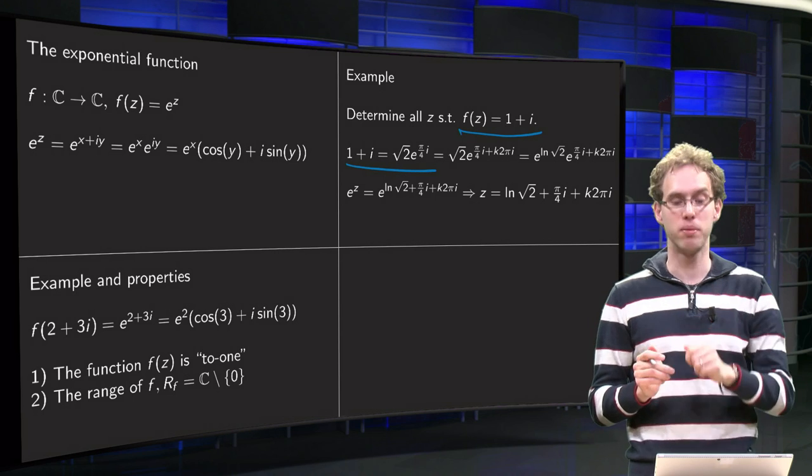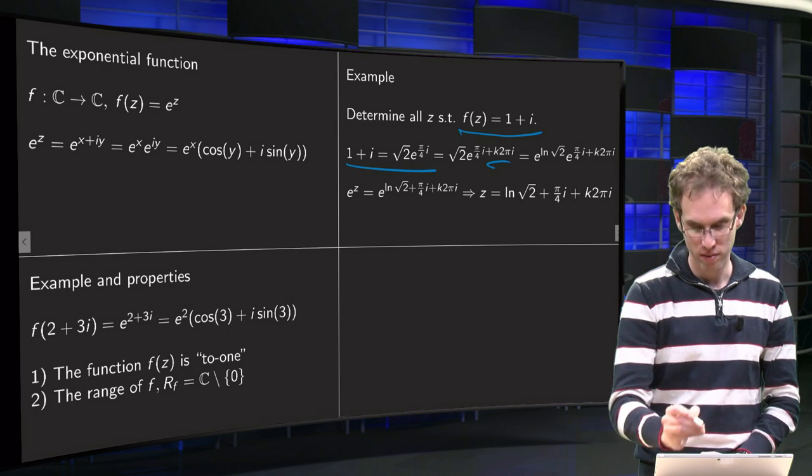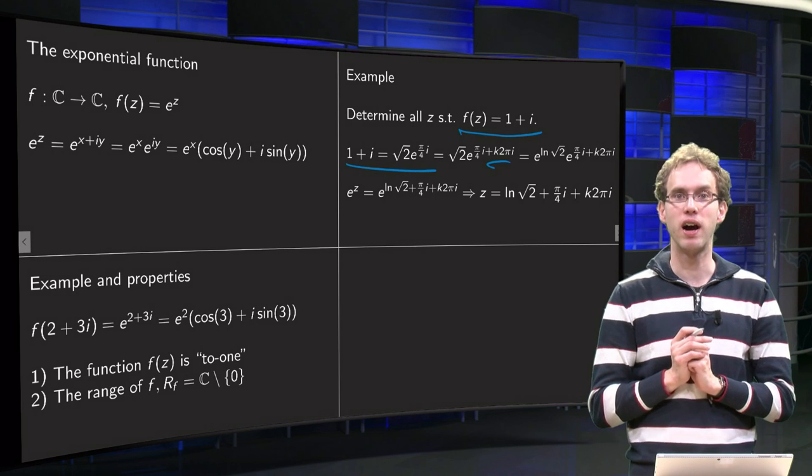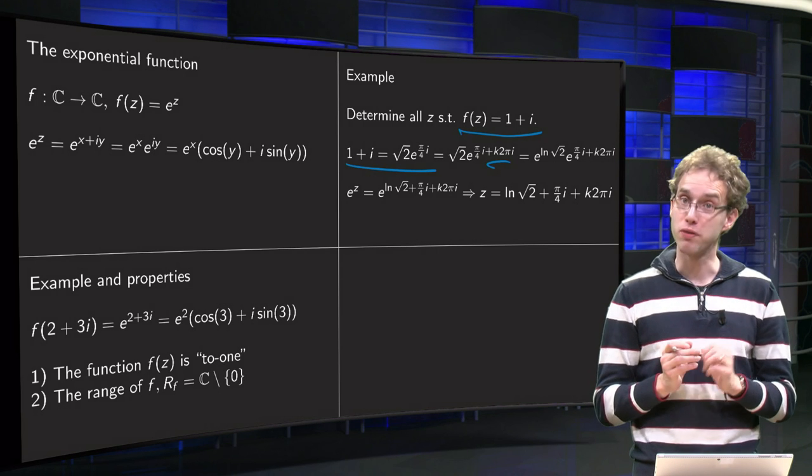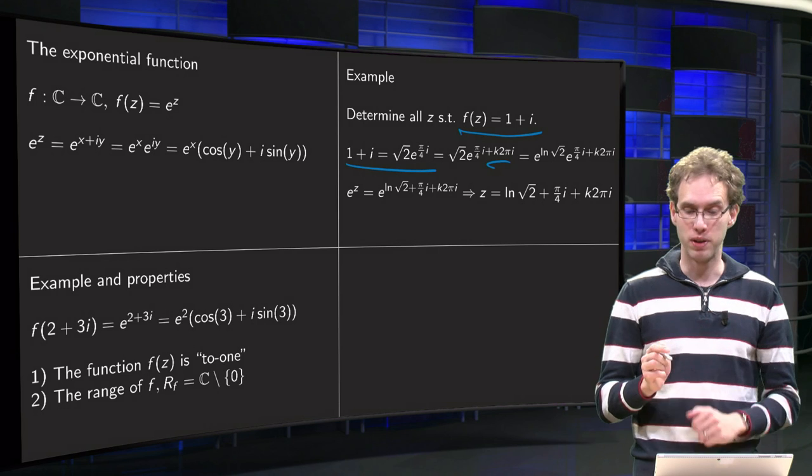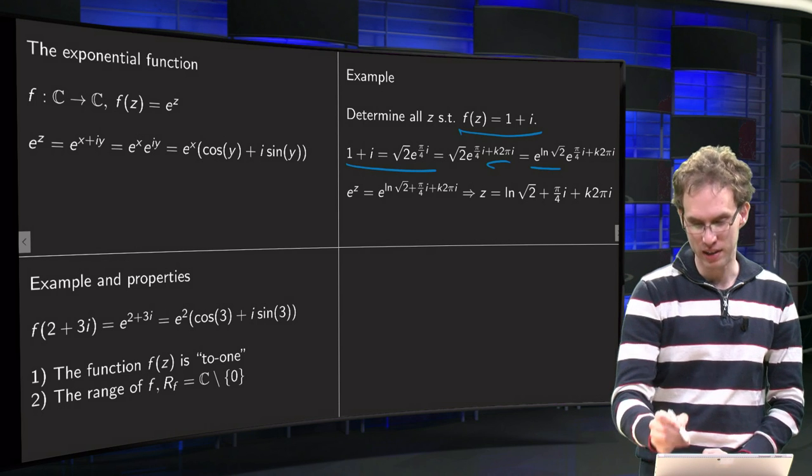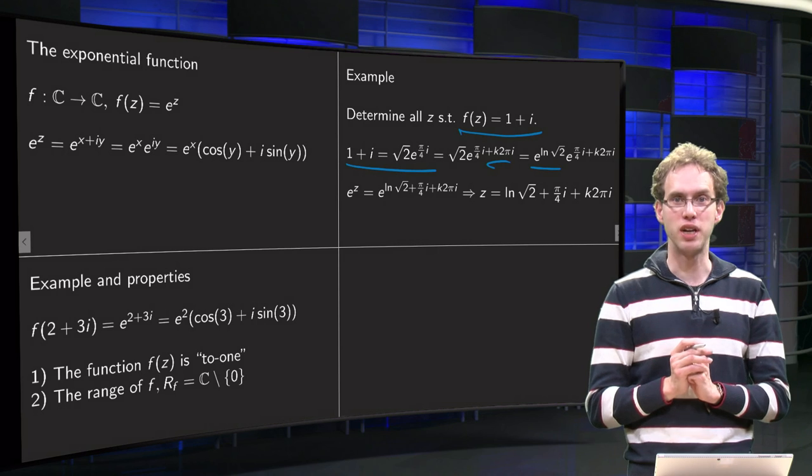Notice that you can always add factors of 2π to the argument, and you again get the same argument. So we add an arbitrary number k times 2π, and then we write our square root of 2 as an exponential as e to the power ln square root of 2, and we keep the rest the same.